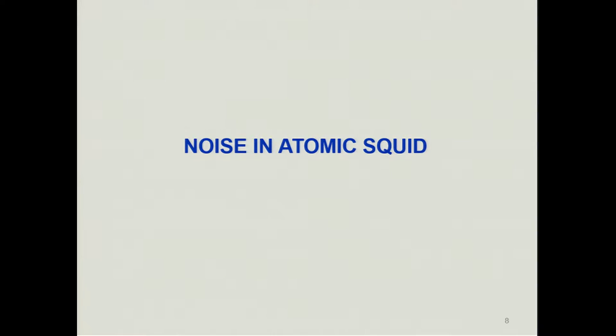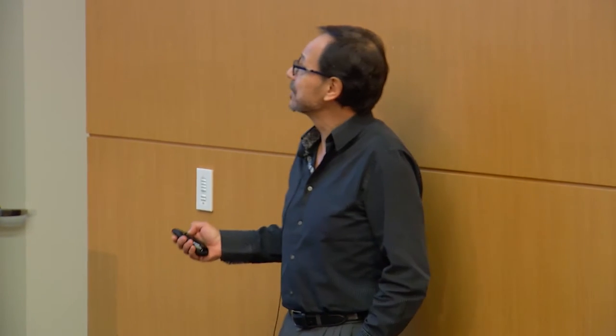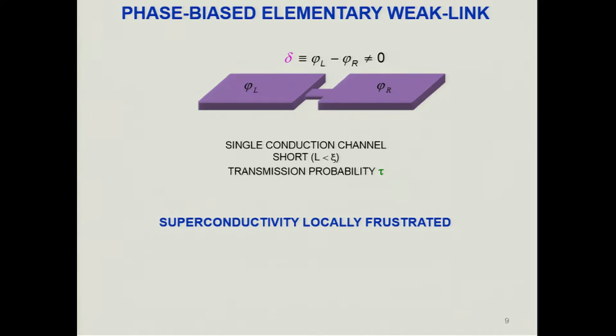Let me now switch to a different noise problem: noise in an atomic SQUID. Most quantum superconducting circuits are based on Josephson tunnel junctions, but those are not the only Josephson weak links. There is an elementary weak link consisting simply of a single conduction channel connected to superconducting reservoirs.